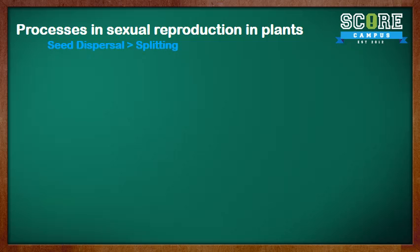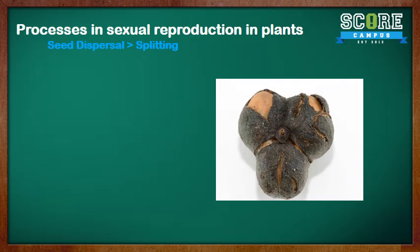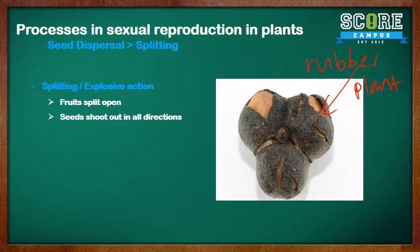And now we have the splitting method of seed dispersal. Here you can see a rubber plant. What happens is that the fruits split open when ripe and shoot the seeds out in all directions, thus helping to disperse the seeds.